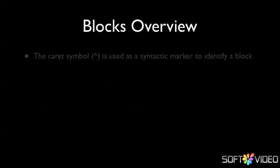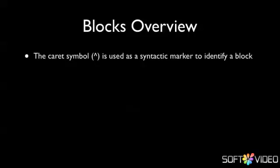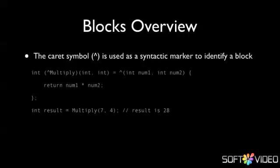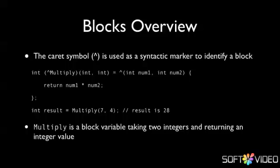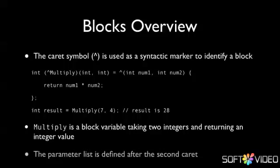Let's take a look at a typical block. The caret symbol is used as a syntactical marker to identify a block. If we look at the code, we can see we have a block called multiply — it's a block variable. It takes in two integers, and as it's an integer block variable, it will return an integer value. The parameter list is defined after the second caret. If we assign the multiply block to an integer result variable, passing in a 7 and a 4, the multiply block will multiply 7 by 4 and return the value 28.